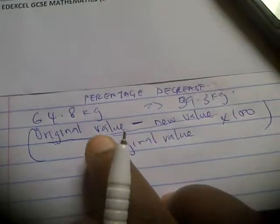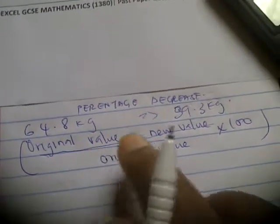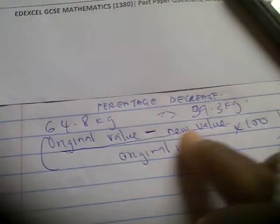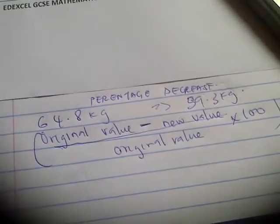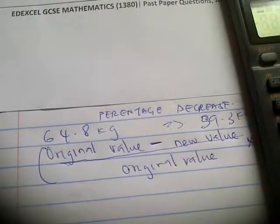That is the formula you're going to follow when calculating percentage decrease. That original value, that value that thing was before, minus the new value that it is now, divided by the original value, what it was before, times 100. Now, using that, calculate this.